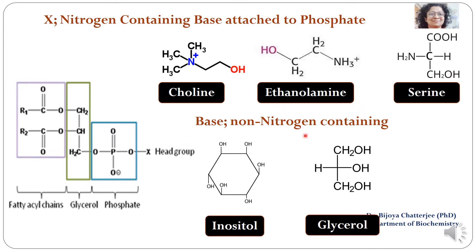The non-nitrogen-containing bases that attach at the X position of the phosphate at the third carbon include inositol — inositol does not have any nitrogen. Similarly, glycerol also does not have any nitrogen, and both these groups can attach at the X position, giving rise to different types of phospholipids.